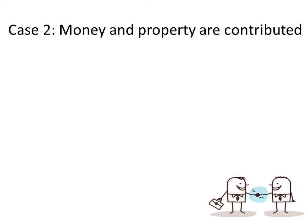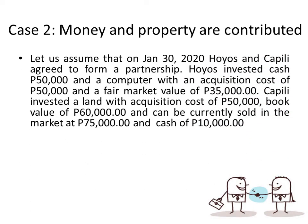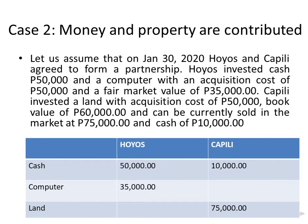What if the partners contribute money and property? Remember, property should be valued at fair market value. On January 30, 2020, Huyoz and Kapili agreed to form a partnership. Huyoz invested cash $50,000 and a computer with an acquisition cost of $50,000 and a fair market value of $35,000. Kapili invested a loan with an acquisition cost of $50,000, book value of $60,000, currently sold in the market at $75,000, and cash of $10,000.